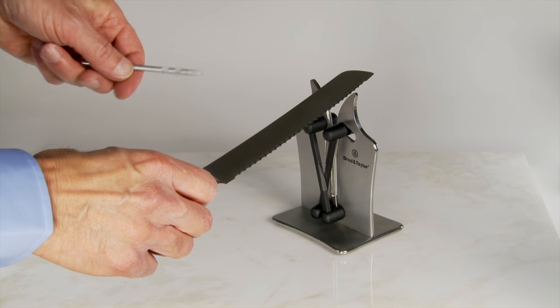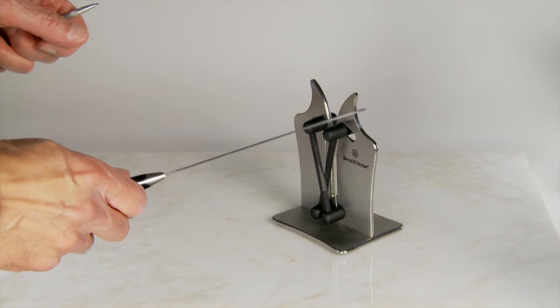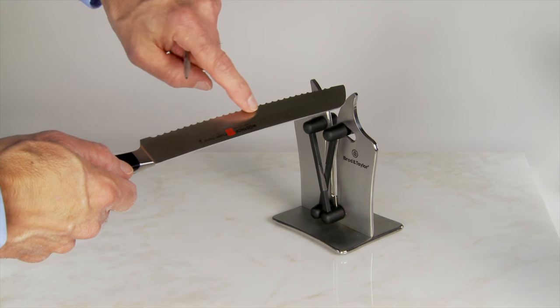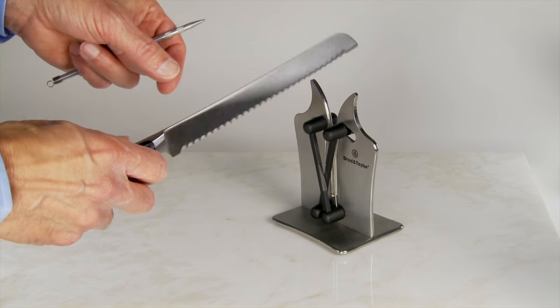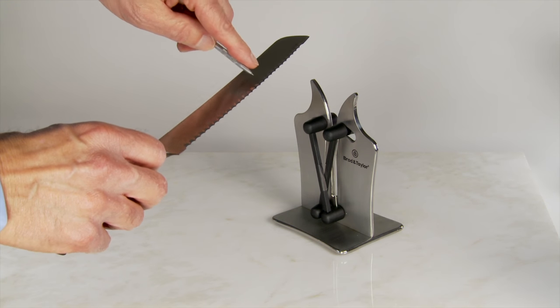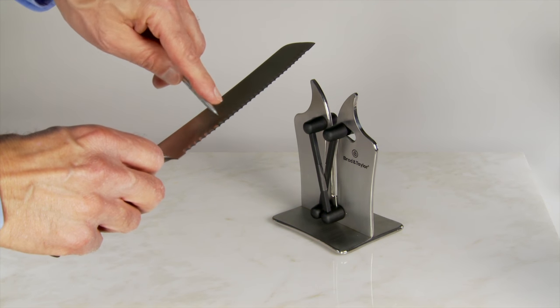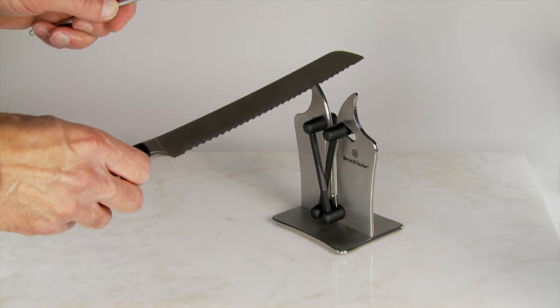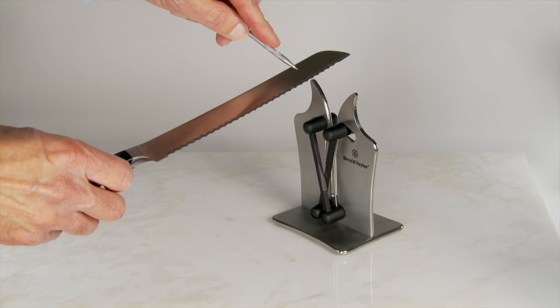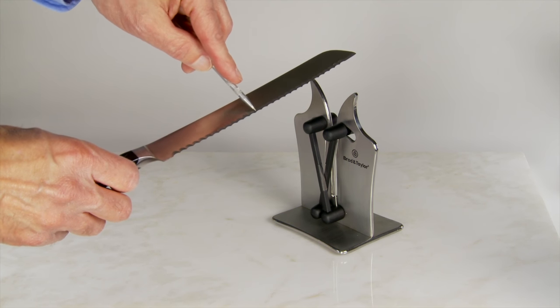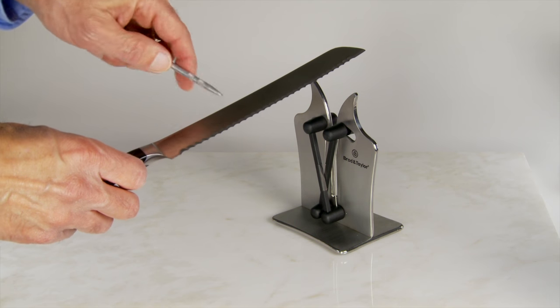So you never want to put this through any type of a standard pull-through sharpener, because you're going to end up grinding away metal on this side. And you need, of course, to be able to sharpen all along the edge. Now, there are some sharpeners that claim to do serrated knives, and generally what they do is just grind the tips off of these serrations, which is really not the best thing to do.